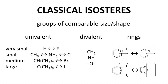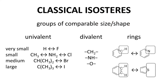There are two types of isosteres. The first type includes classical isosteres. These are functional groups that are similar in size and shape. These groups are sorted into different categories based on the nature of the groups: univalent, divalent, and ring substitutions.